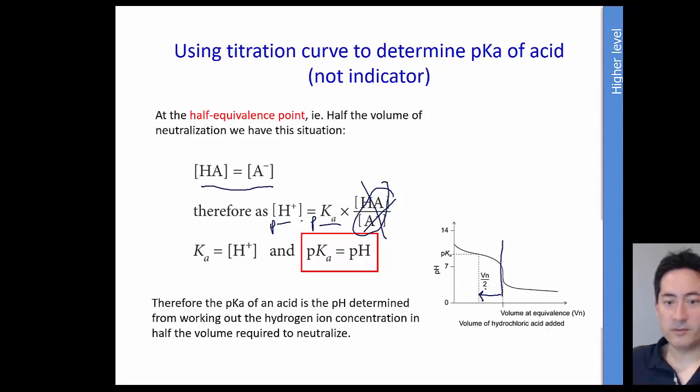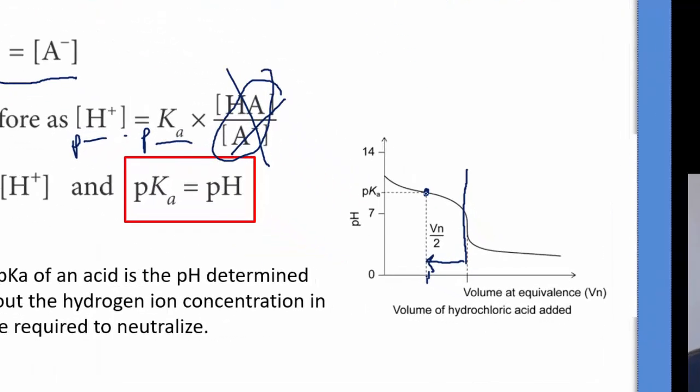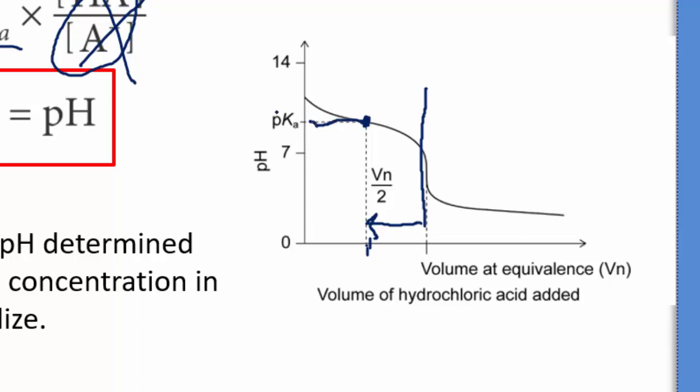And so that's a convenient way. So once you get the whole thing neutralized, you go halfway when they're half-half and they're equal, and at that pH there, that is actually equal to the pKa of the acid.